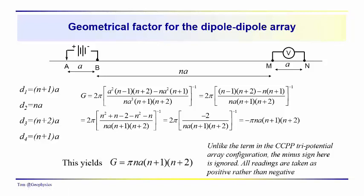So we have an na times an n plus 1 times an n plus 2. Go through the multiplications up here, subtract common terms from each other, we end up with minus 2 times n times a times n plus 1 times n plus 2, and over here we end up with the geometrical factor, minus pi times n times a times n plus 1 times n plus 2.